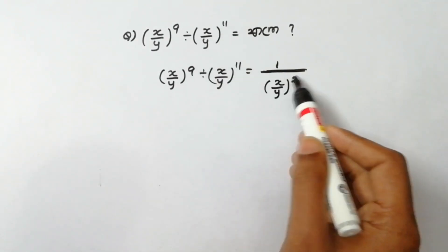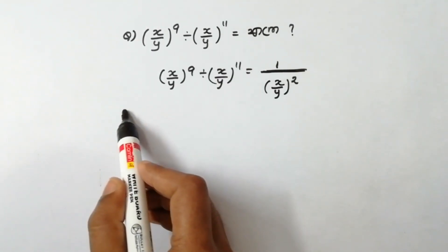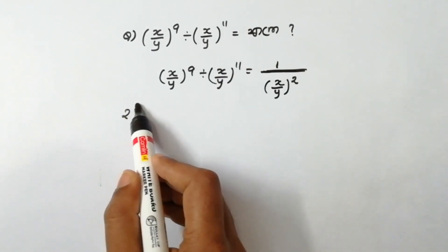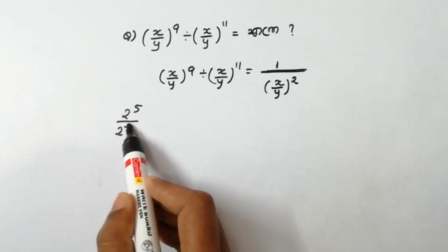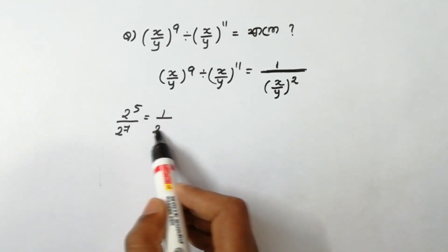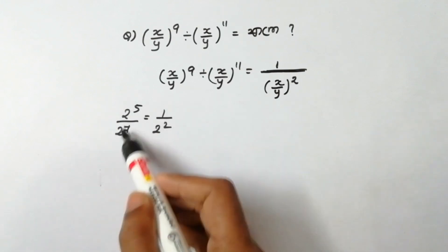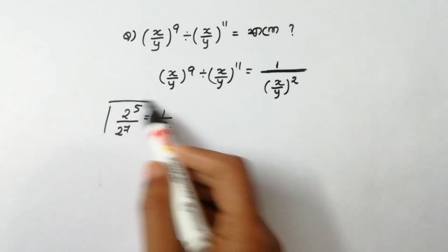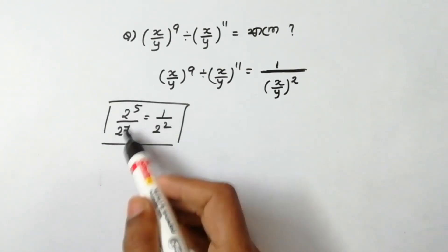This is the rule. For example, 2 raised to 5 divided by 2 raised to 7 — the answer is 1 by 2 squared. This is the division rule for repeated multiplication.